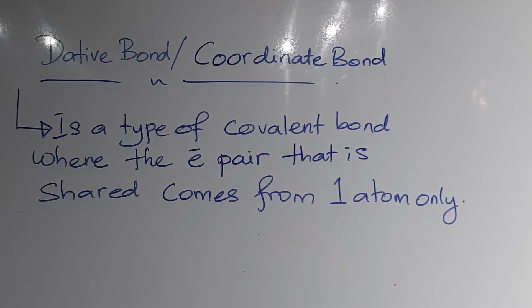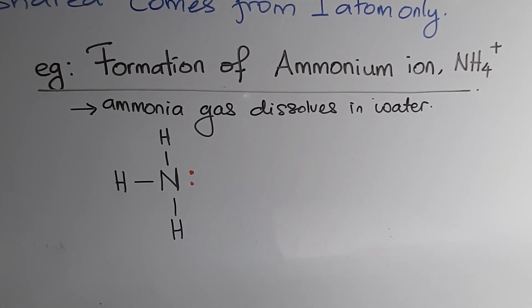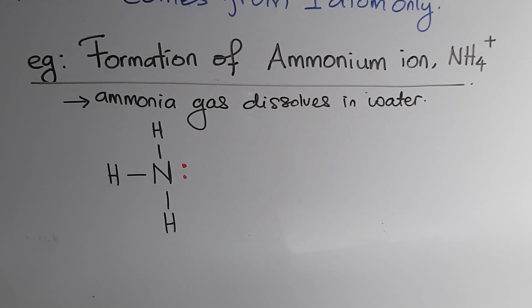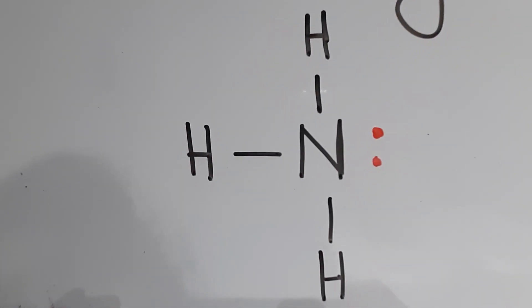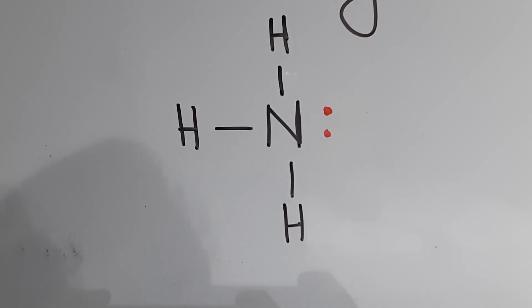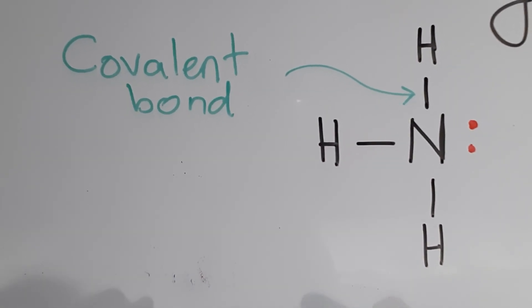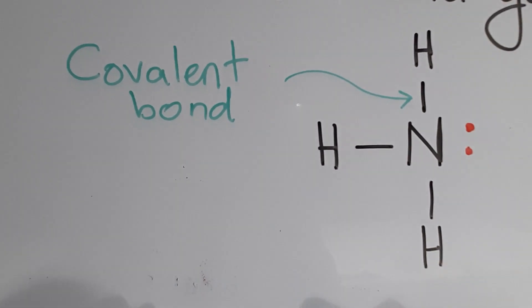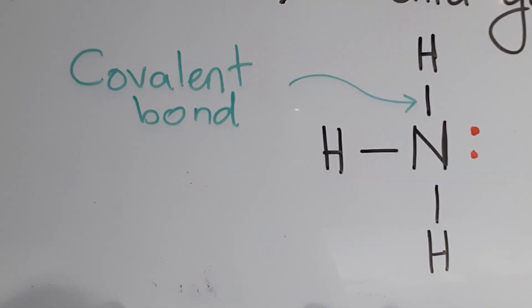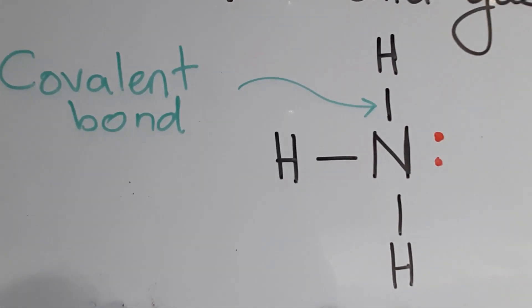Let's look at the example of molecules which have the dative bond. The formation of ammonium ion occurs when ammonia gas dissolves in water. Looking closely at the Lewis structure of ammonia: the ammonia molecule consists of one nitrogen atom and three hydrogen atoms. The bond formed between the nitrogen atom and the hydrogen atoms in the ammonia molecule is called a covalent bond.